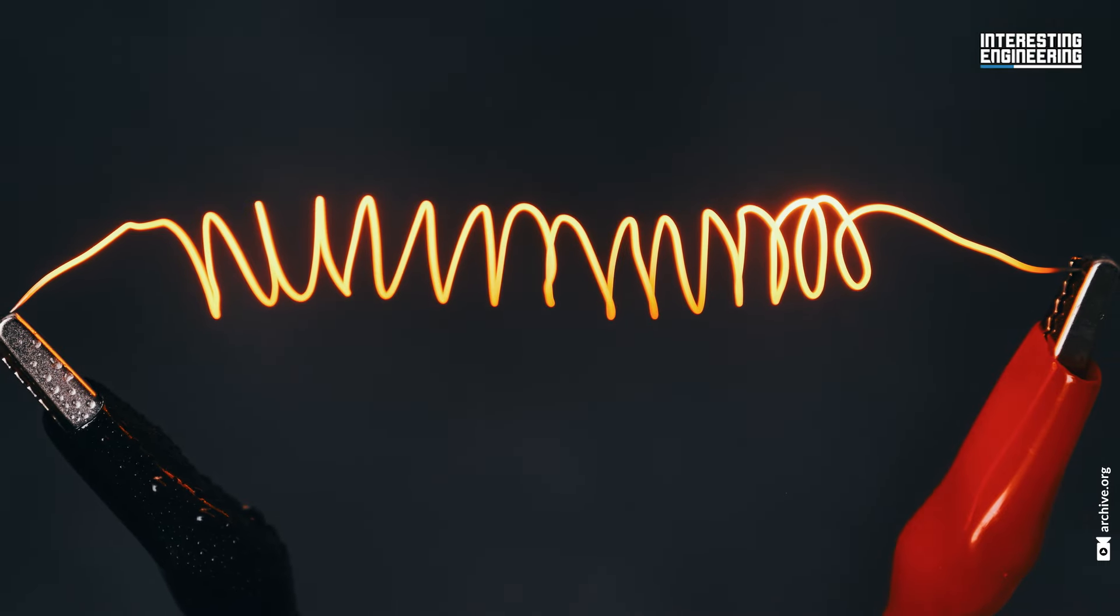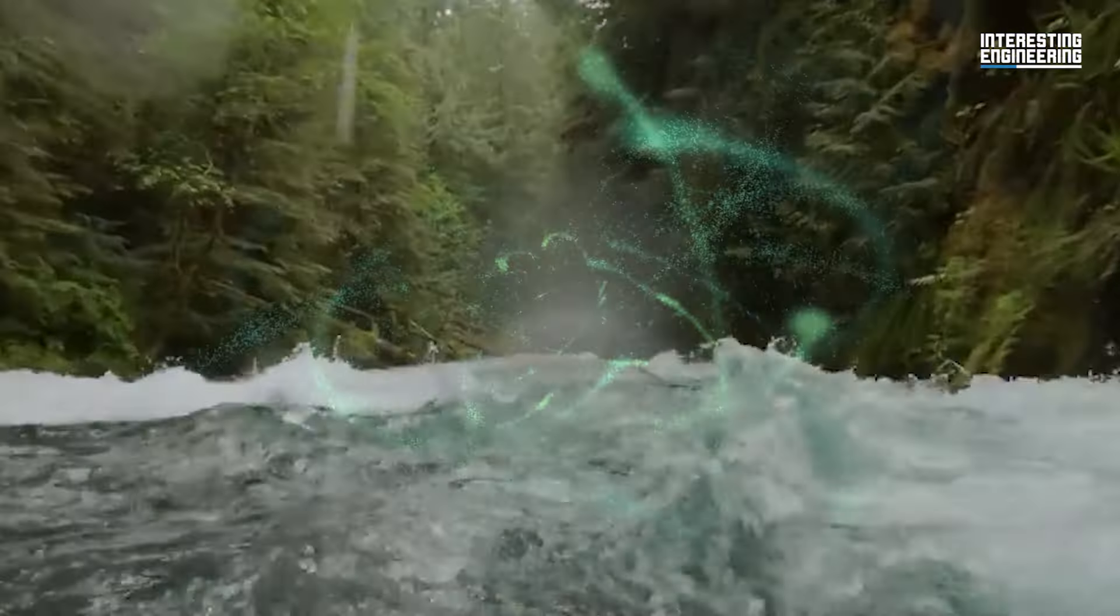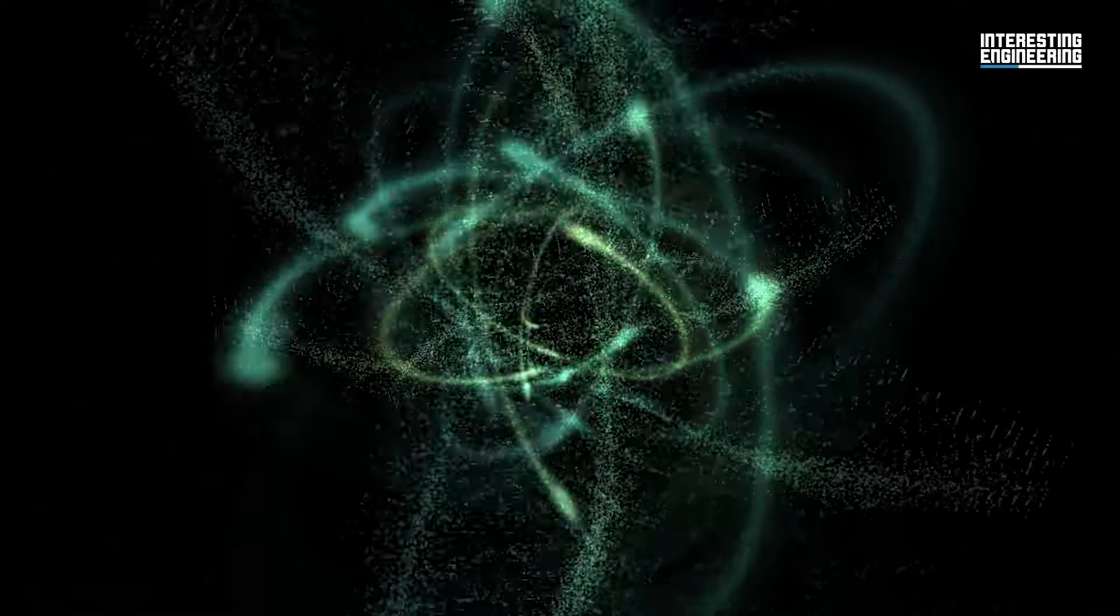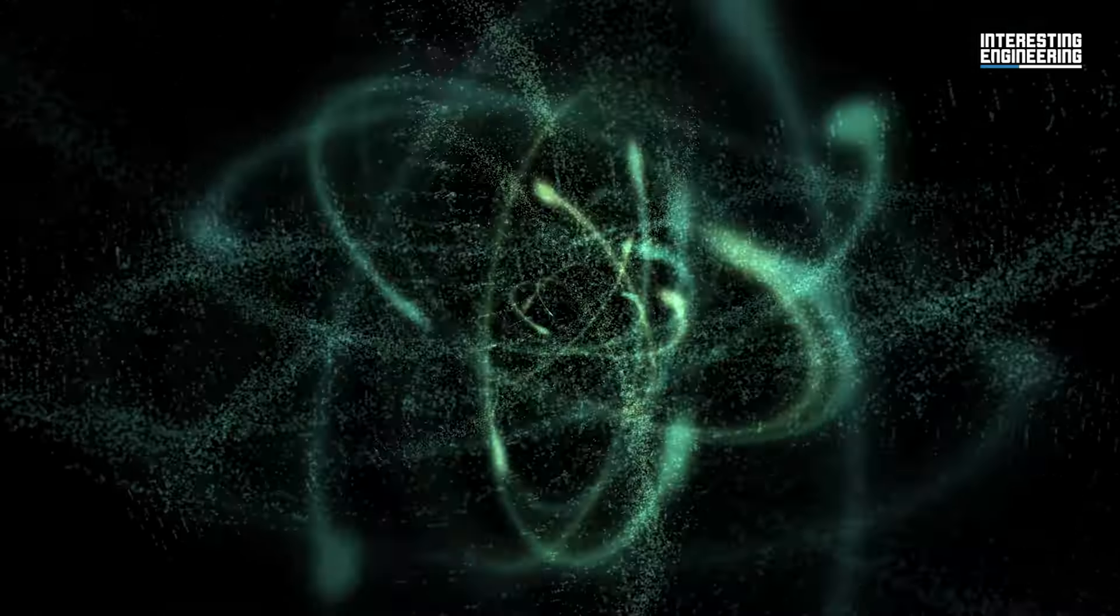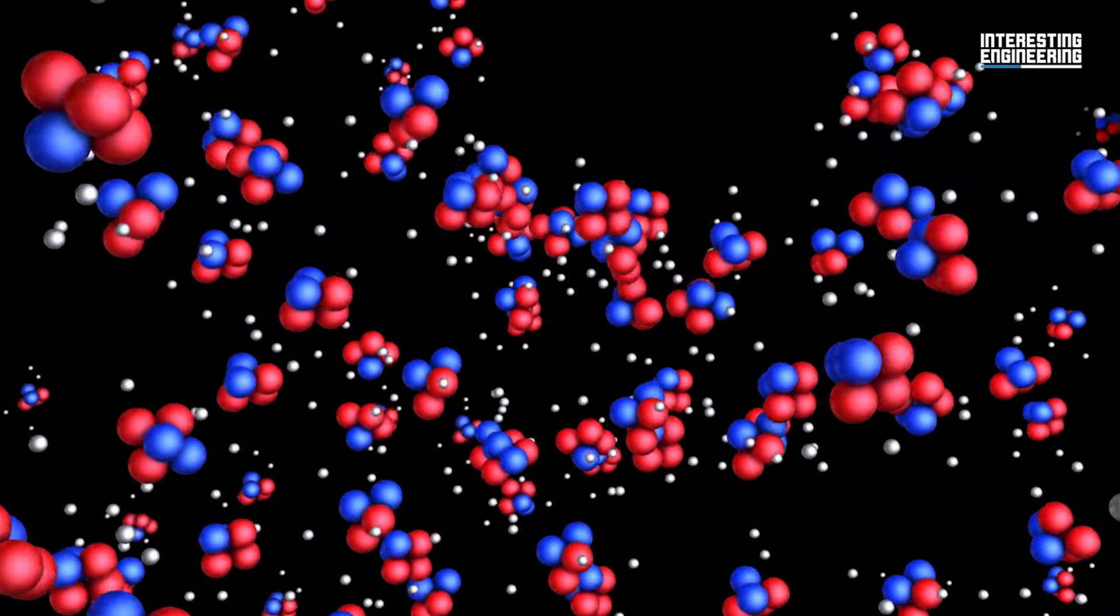To understand this, think of electricity as a flowing river of electrons. In regular conductors, like the wires we use in our homes, there is always some resistance to the flow of electrons, which results in energy loss and heat generation.